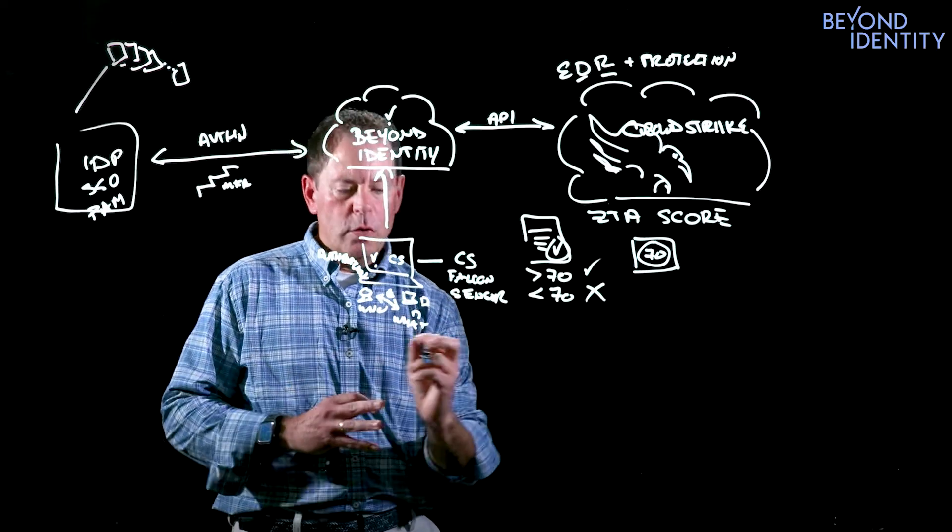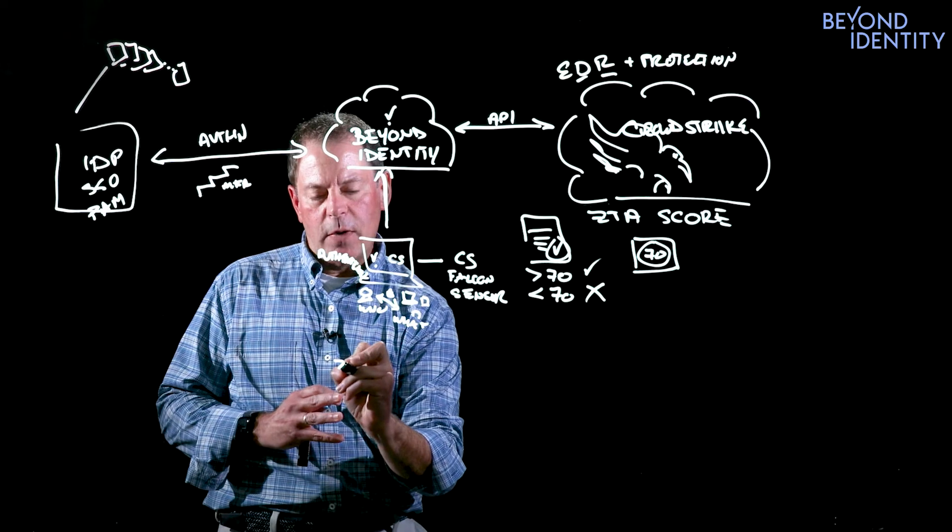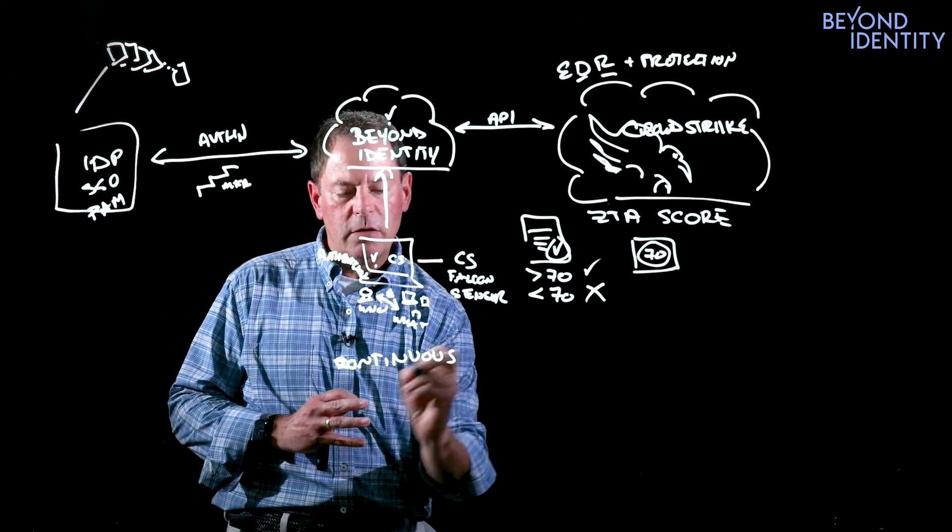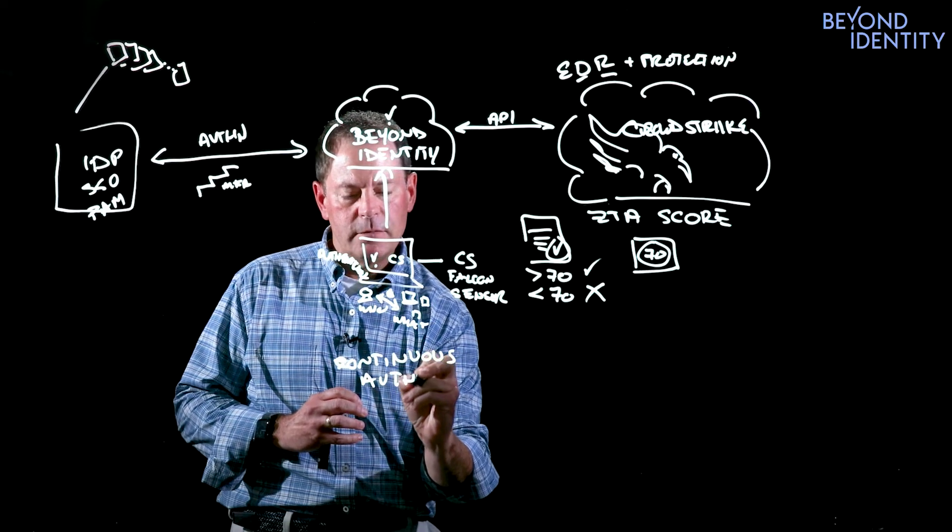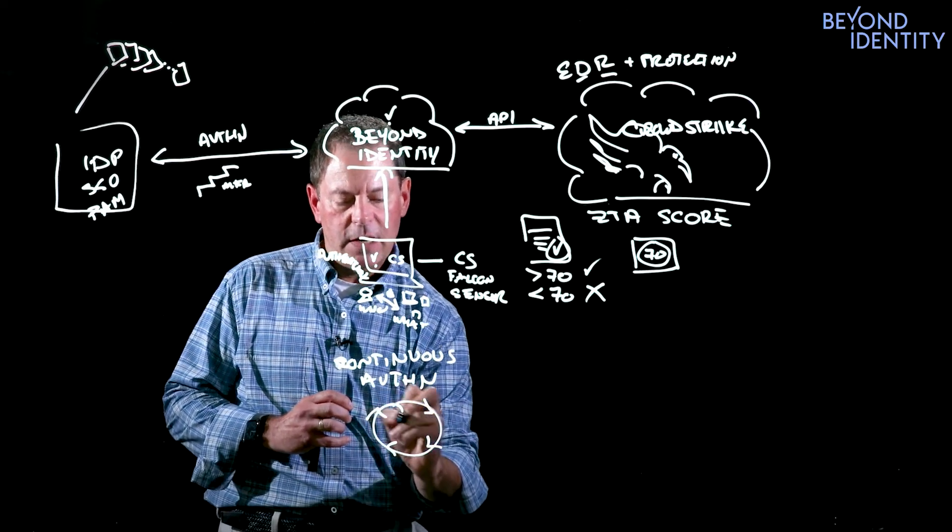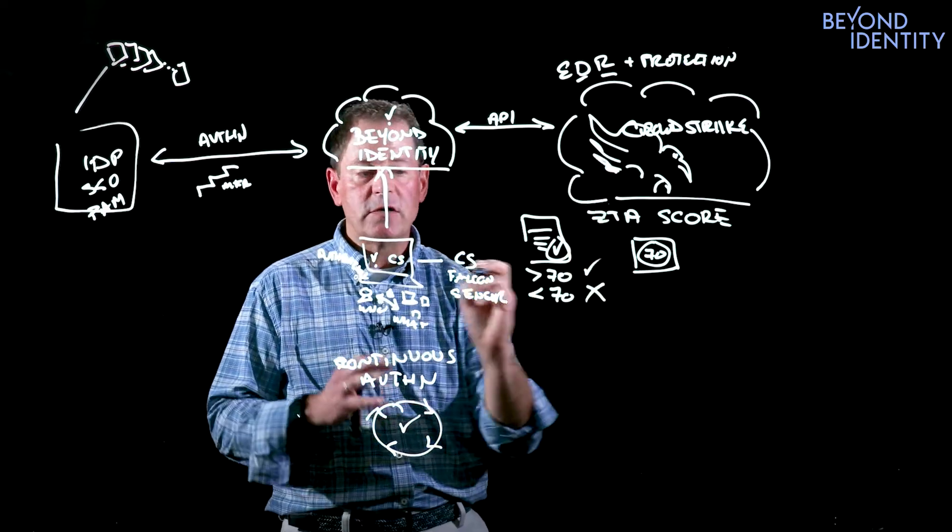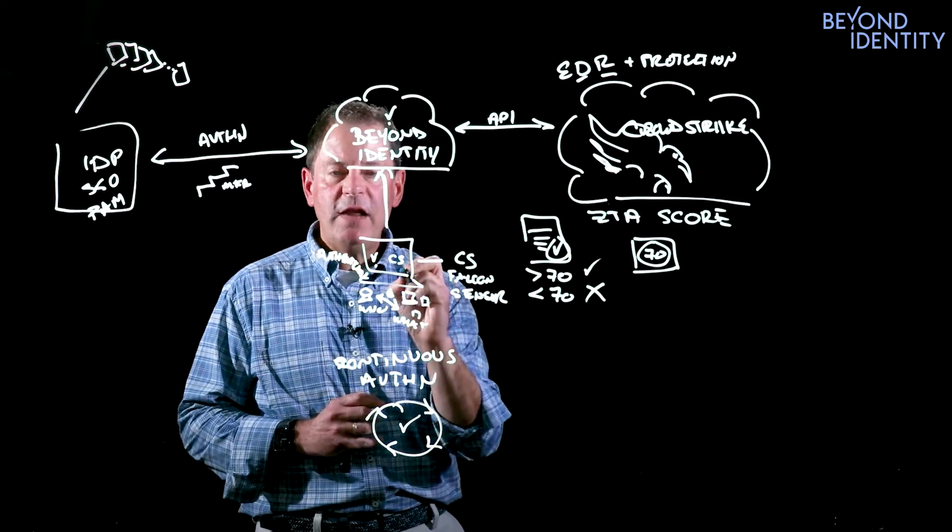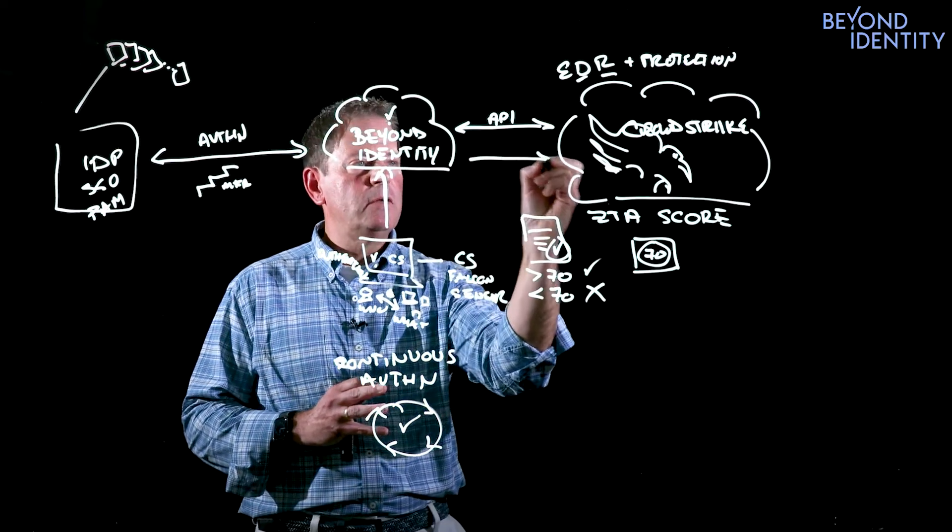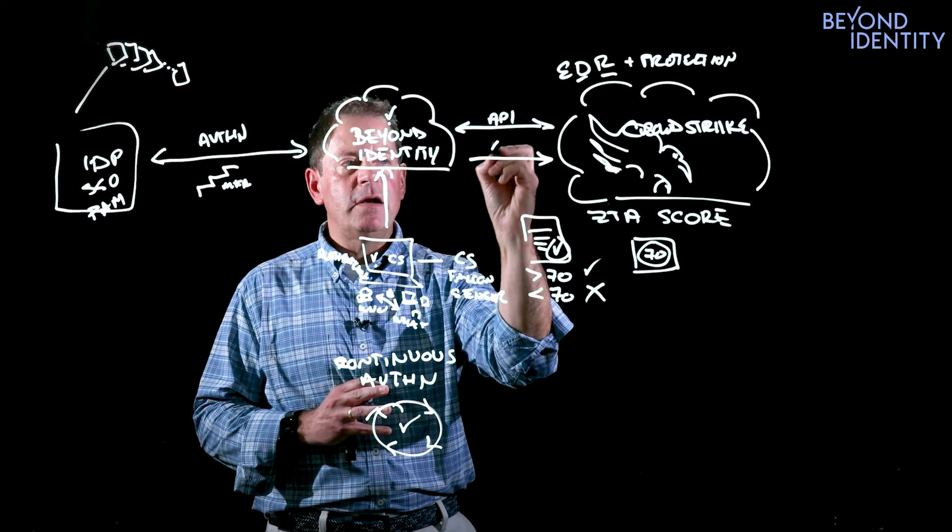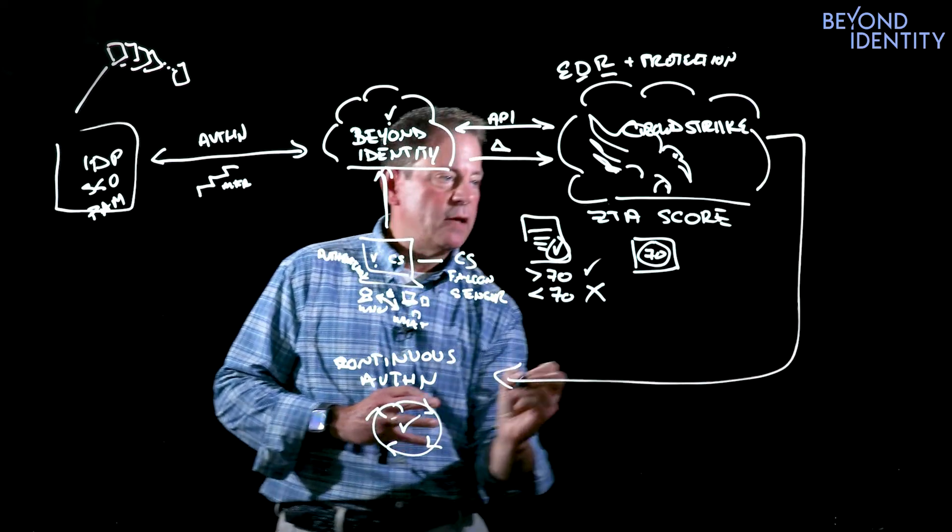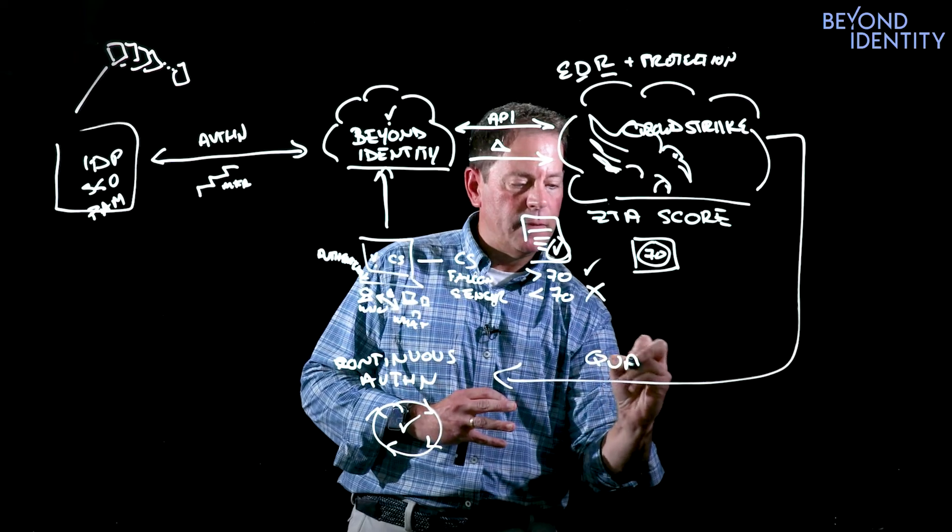And then finally, we can even go one step further around the whole notion of continuous authentication, critical on the journey to zero trust. We can be assessing this on an ongoing basis, both with CrowdStrike running continuous signals as well as our own. And if anything changes on that device, we can immediately signal CrowdStrike that there has been a change on that device and CrowdStrike can then quarantine that device.